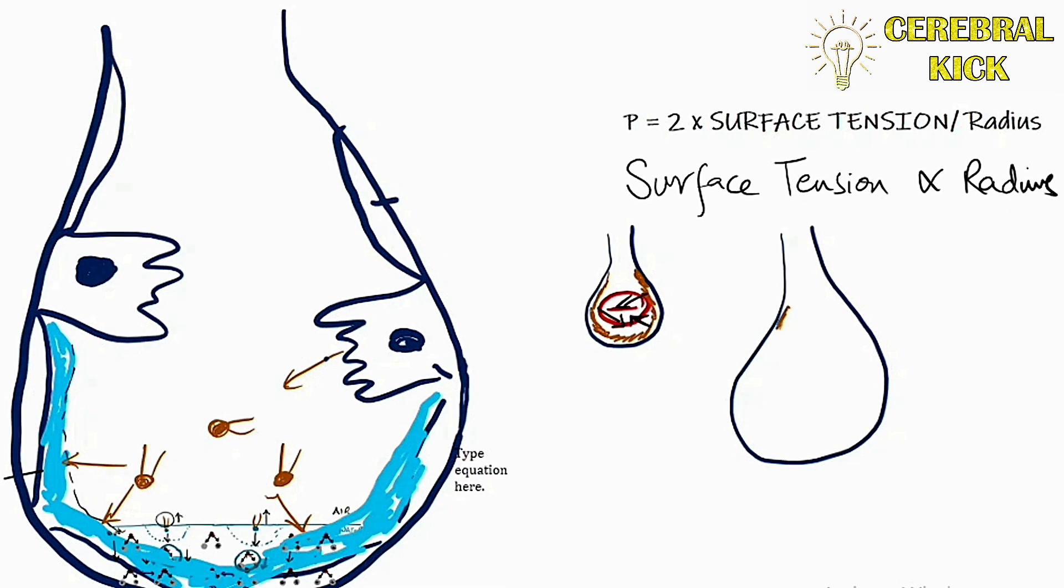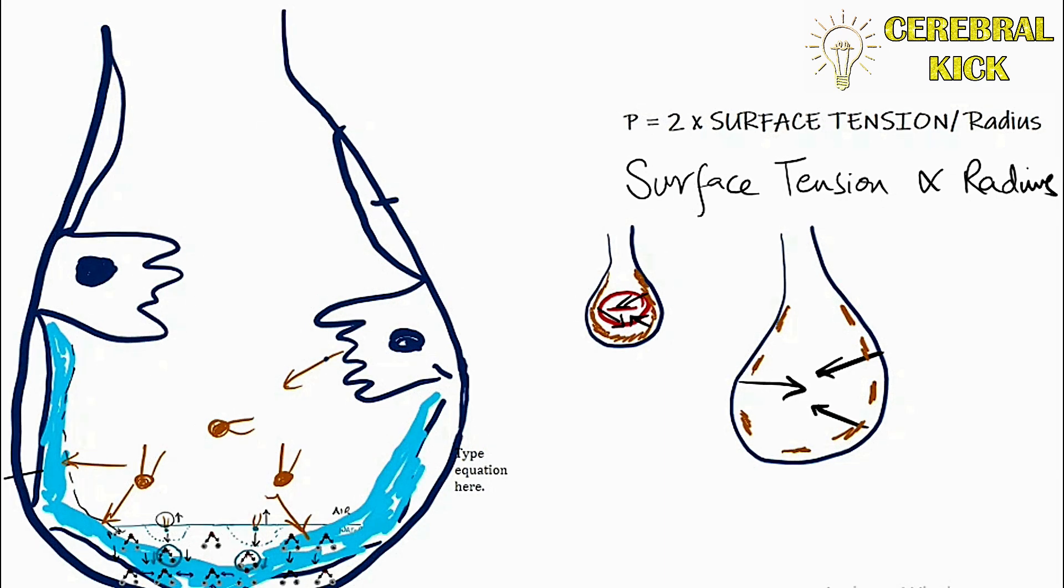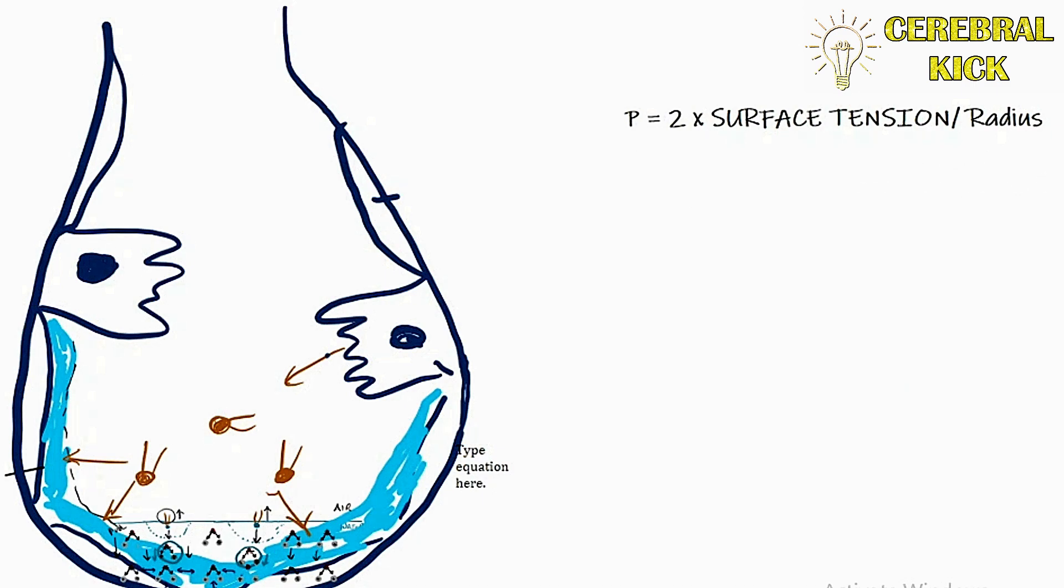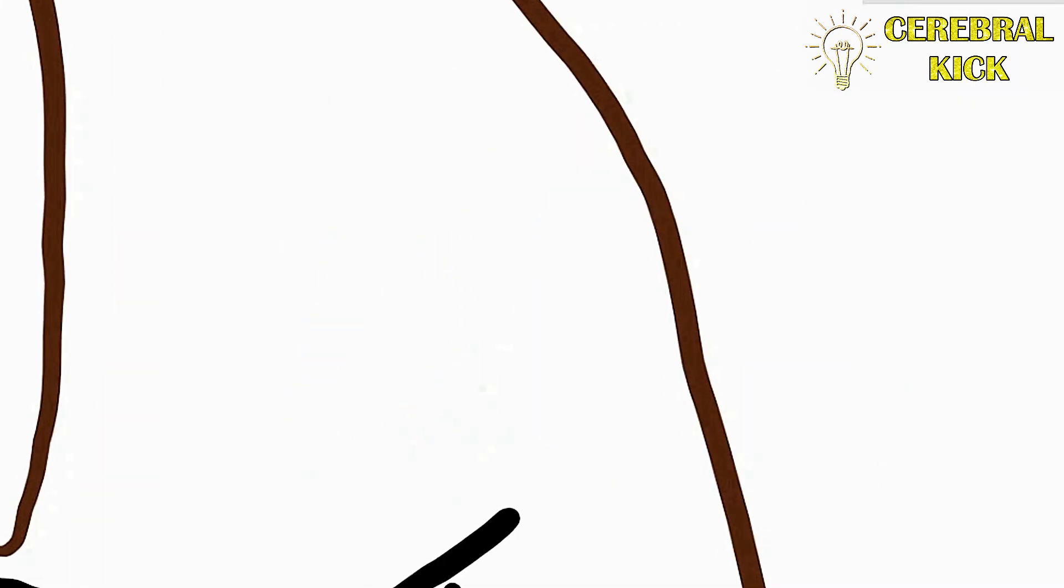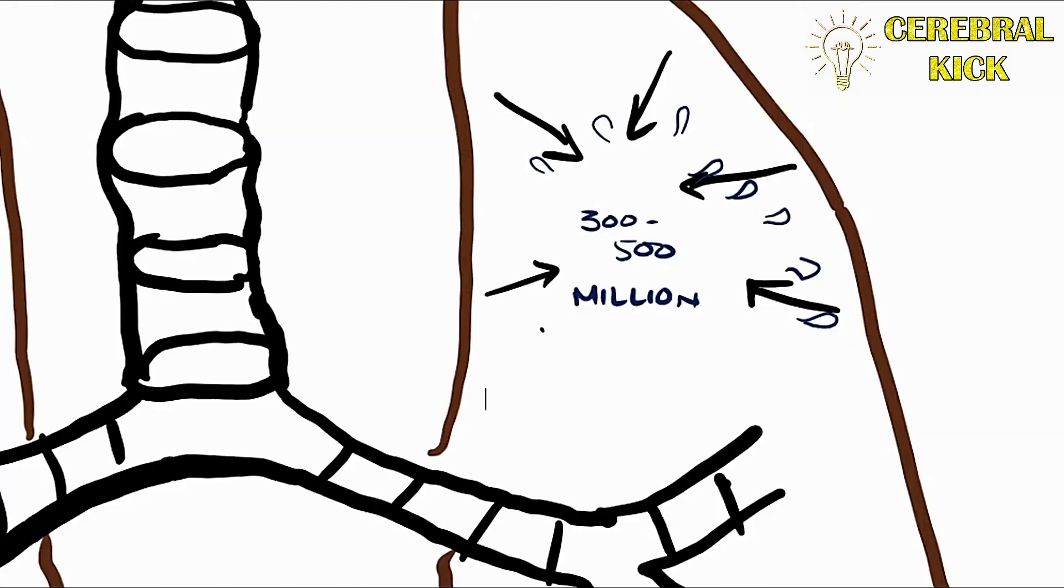And when the alveolus is fully expanded, this surfactant tends to be dispersed, because the volume of alveolus is high. So when the surfactant is dispersed, it would result in more surface tension forces to collapse the alveolus. This would prevent the overdistension of the alveolus and barotrauma. This is the story of surface tension of a single alveolus. Now imagine there are 300 to 500 million alveoli in a single lung.